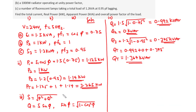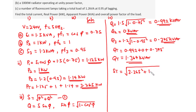Using the formula for apparent power, ST equals the square root of PT squared plus QT squared: the square root of 3.265 squared plus 1.367 squared, which equals 3.54 kilovolt amperes. This is the value of the total apparent power.